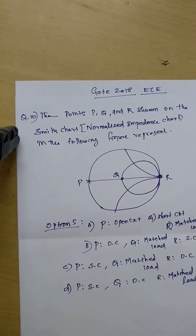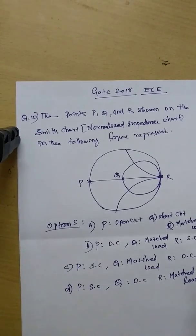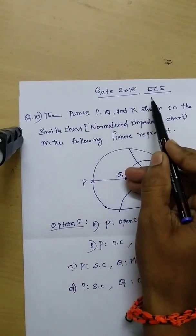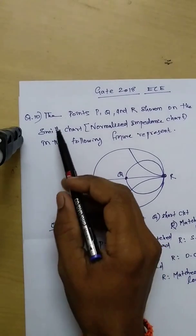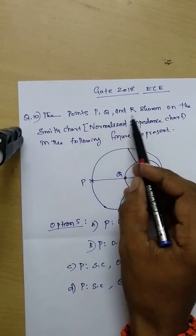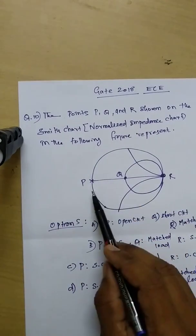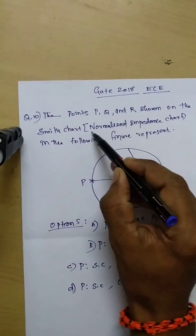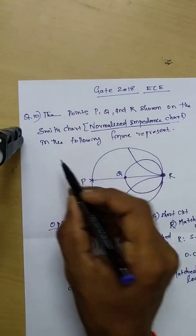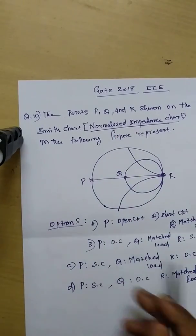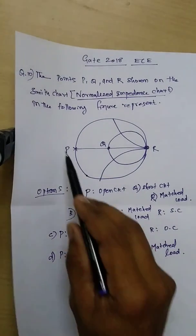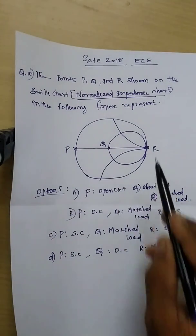Let us take one simple problem which was asked in GATE 2018 ECE paper, question number 10. The points P, Q, R shown on the Smith chart — normalized impedance chart in the following figure — represents: Option A: P is open circuit, Q is short circuit, and R is matched load.